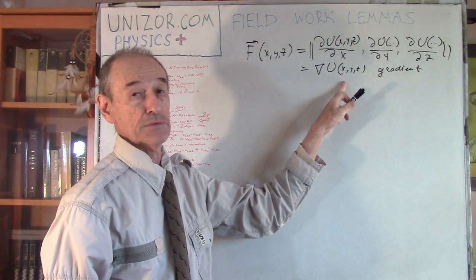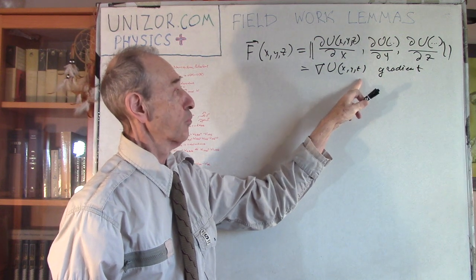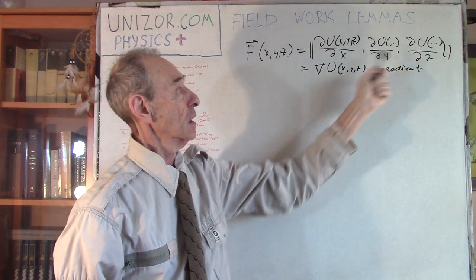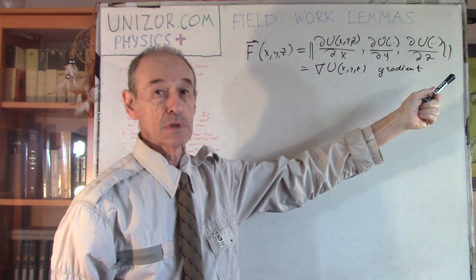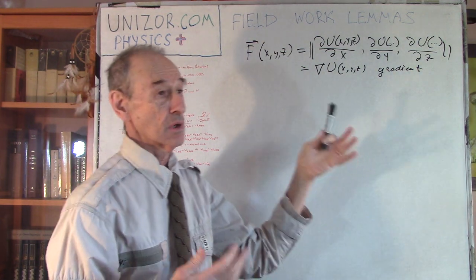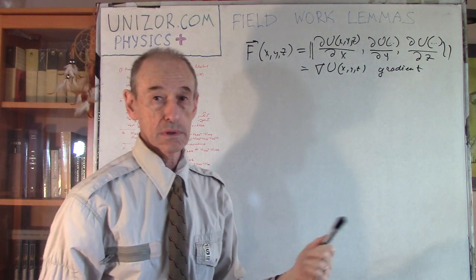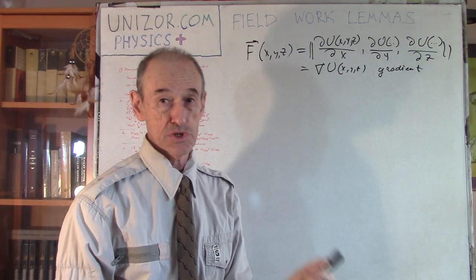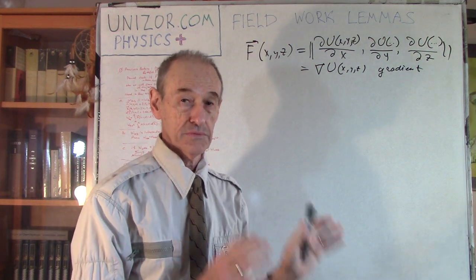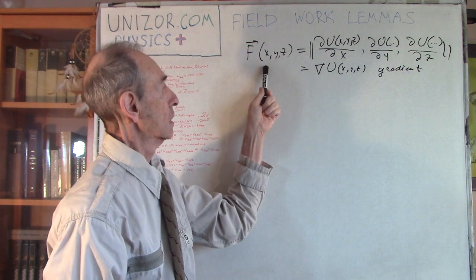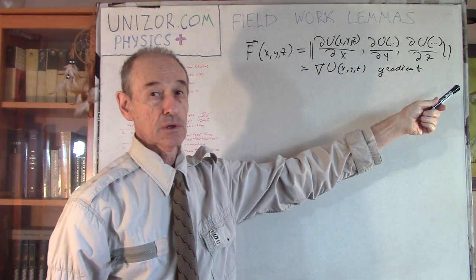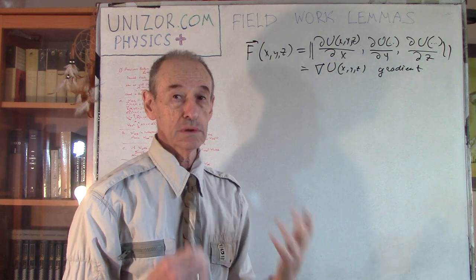This potential is a scalar function, which means at every point x, y, z there is only one value. But when you take the partial derivatives by x, y, and z, you have three values, and those three values constitute the vector of force. So we are considering only fields whose intensity force can be represented as the gradient of some scalar function called potential.